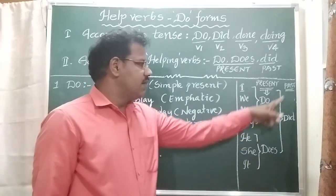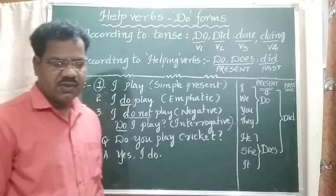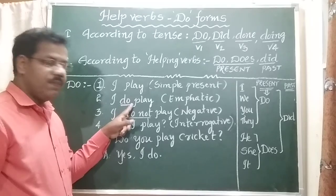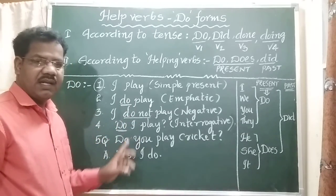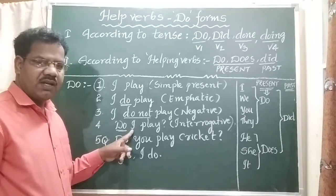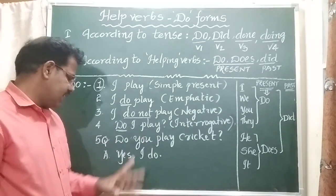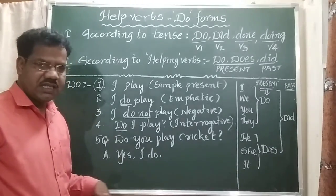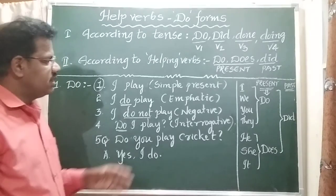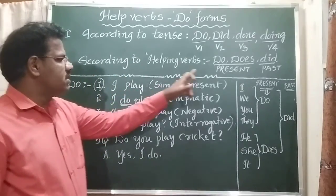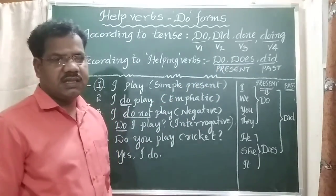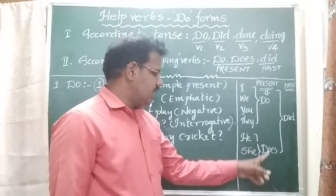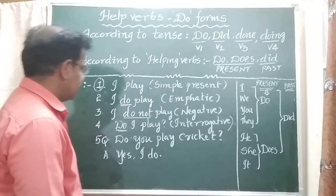Past tense. For example: I play becomes I did play. I did not play - negative sentence. Did I play? Did you play cricket? Yes, I did. These are according to helping verbs: Do, Does, Did. Practice it.